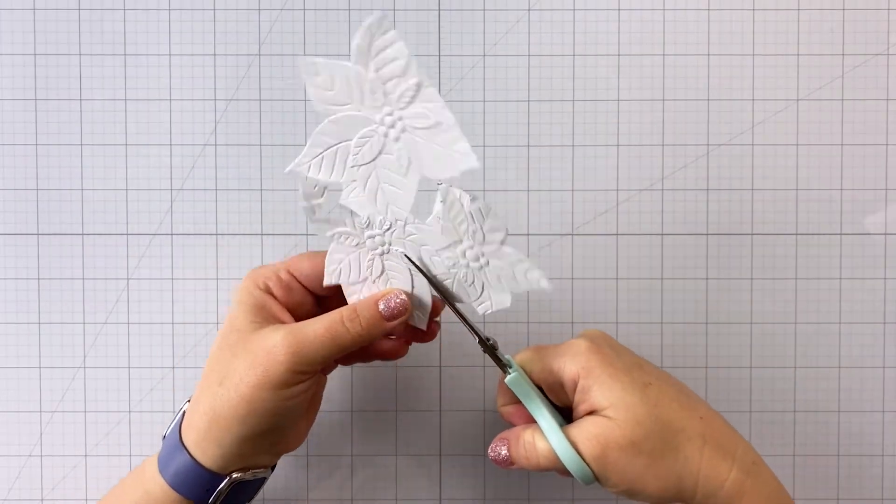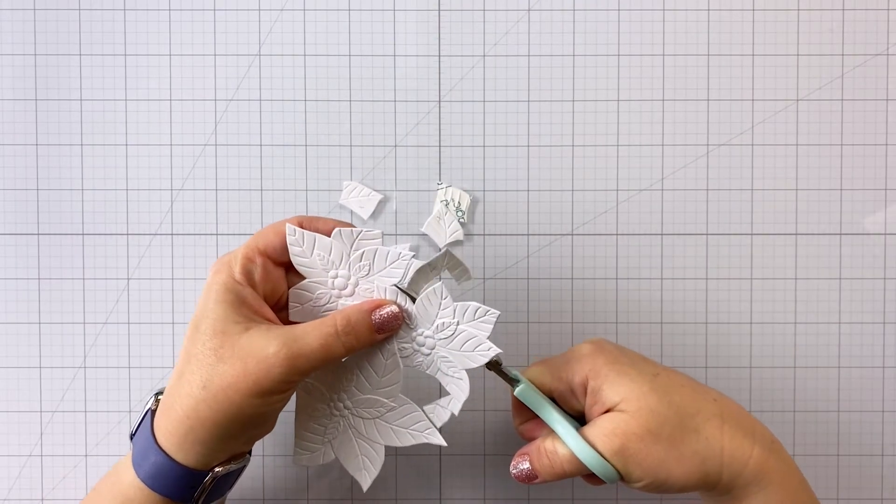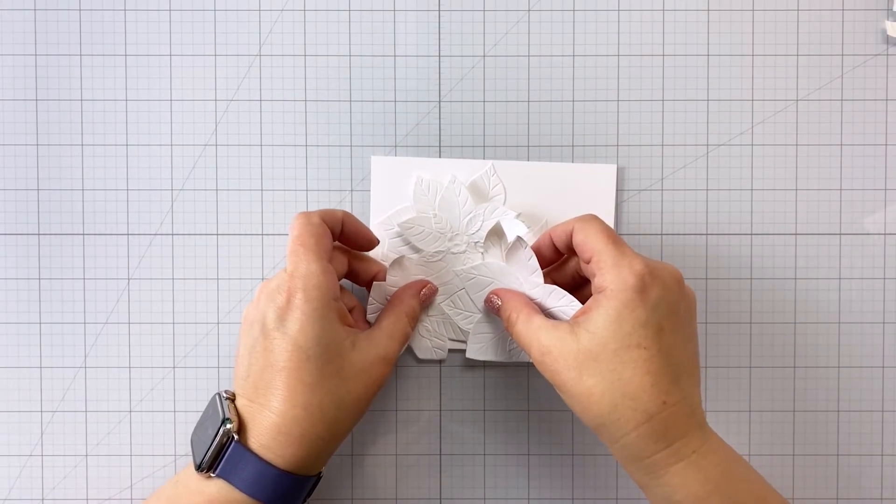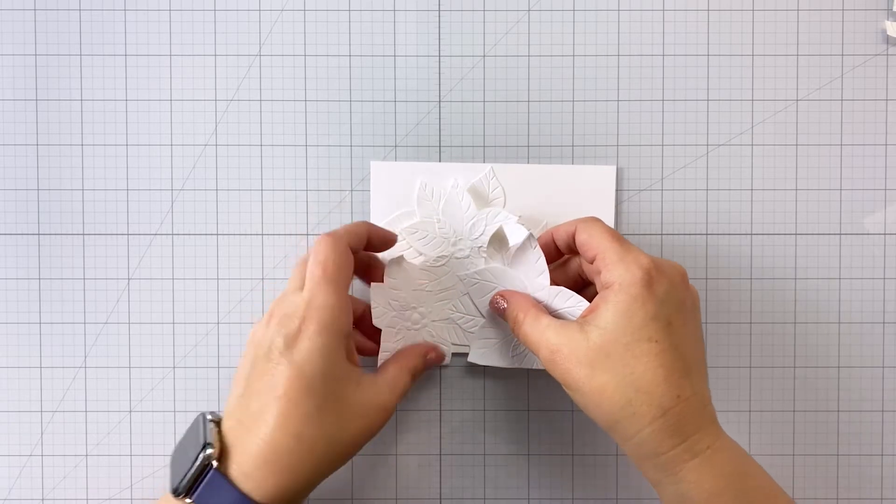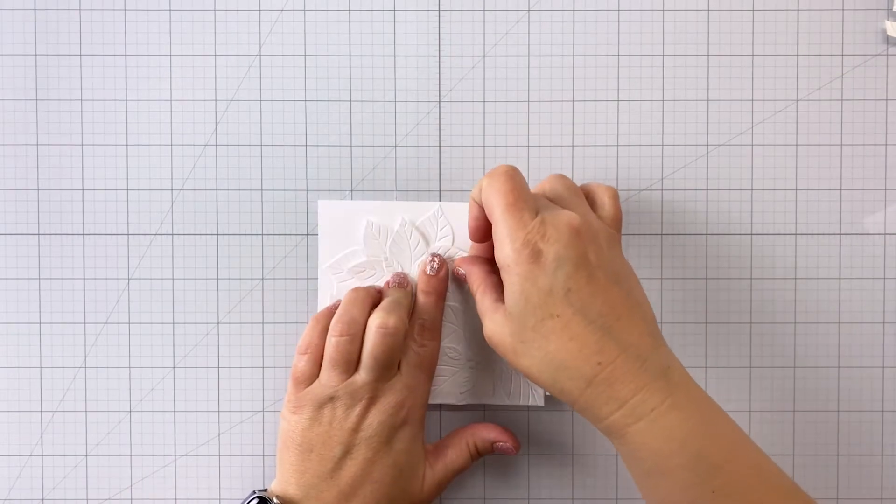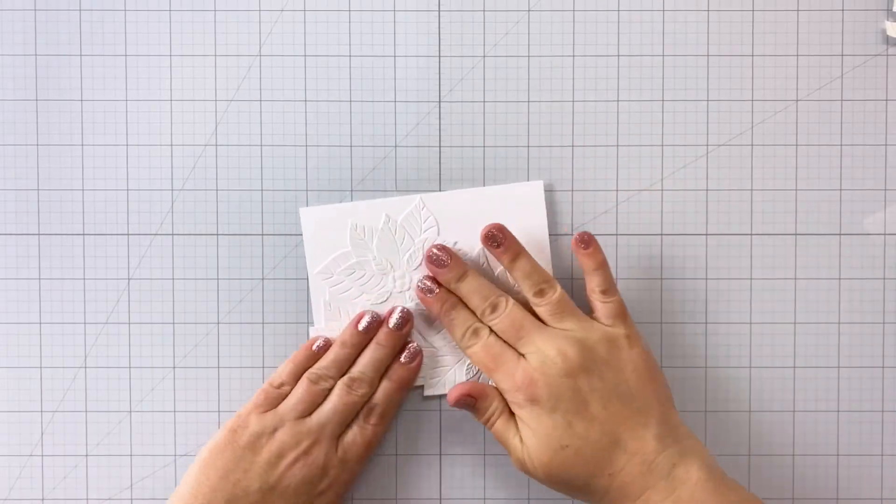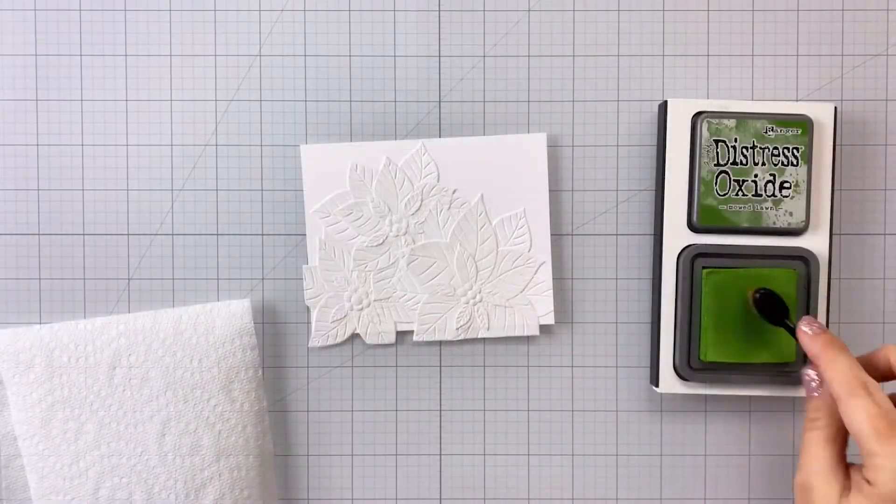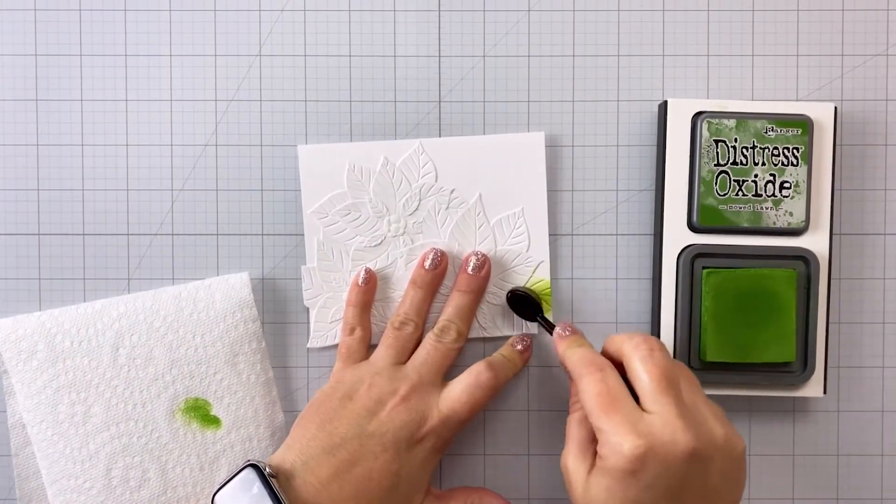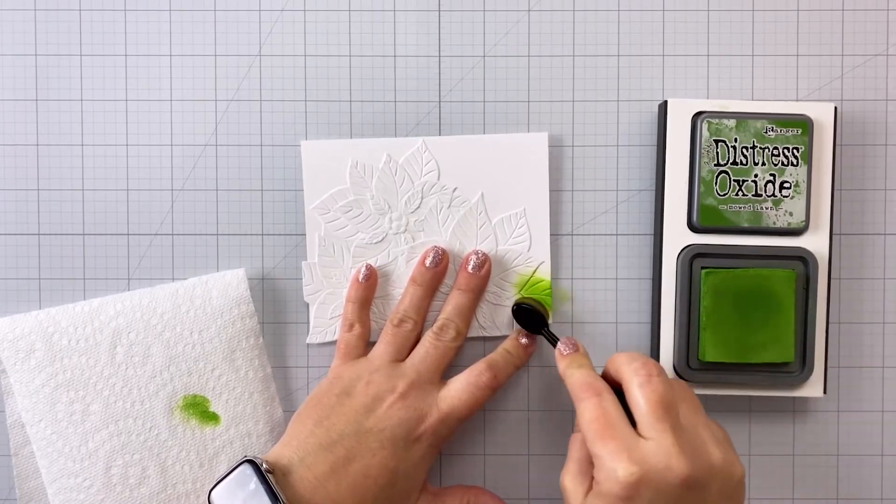So once I get all of those different leaves cut out, I can go ahead and put down my piece of masking paper that has all of the leaves that are going to be red. And I can apply that on top of the piece of cardstock that I already embossed with the embossing folder. So this piece of cardstock is cut to 4¼ inches by 5½ inches. So this will be an A2 sized card. And once I get that down there, I can go in here with some distress oxide and color all of my leaves. Now I'm not worried about the edges because I am going to cut out this whole image from the cardstock panel.